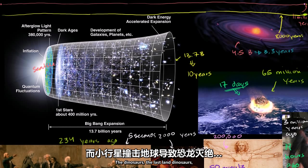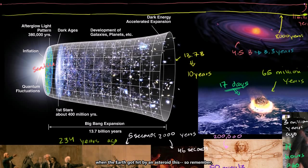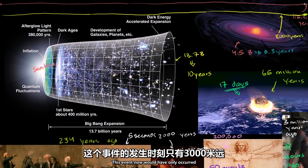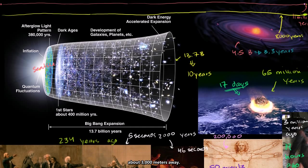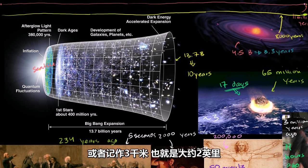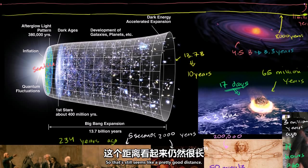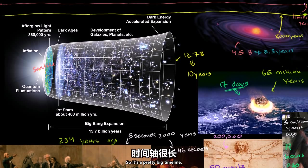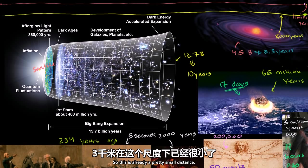The last land dinosaurs going extinct — when the Earth got hit by an asteroid — on this timeline that stretches all the way to Seattle, that event would have occurred only about three kilometers away, or roughly two miles. That still seems like a pretty good distance, but remember, our timeline stretches all the way to Seattle from the San Francisco area, so it's a pretty small distance.